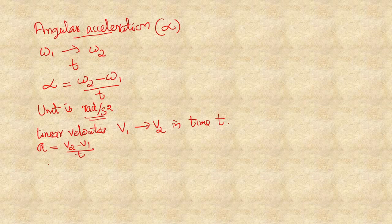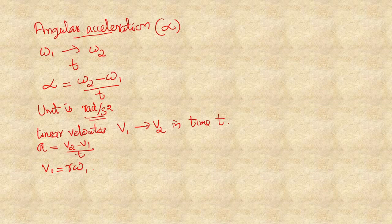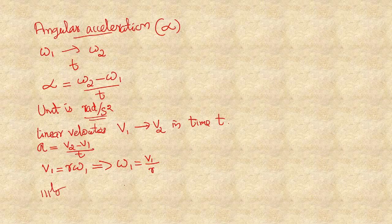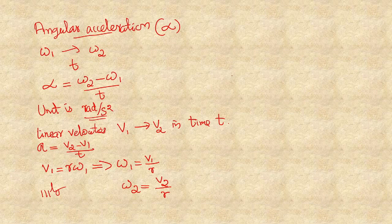We can use the relation between linear velocity and angular velocity. Since V equals R times omega, we have V one equals R times omega one, so omega one equals V one divided by R. Similarly, the final angular velocity omega two equals V two divided by R.